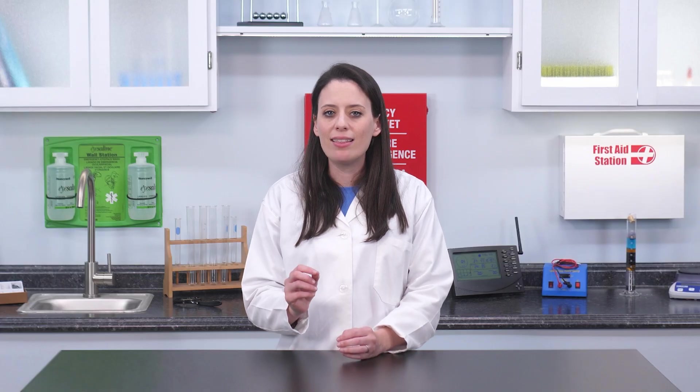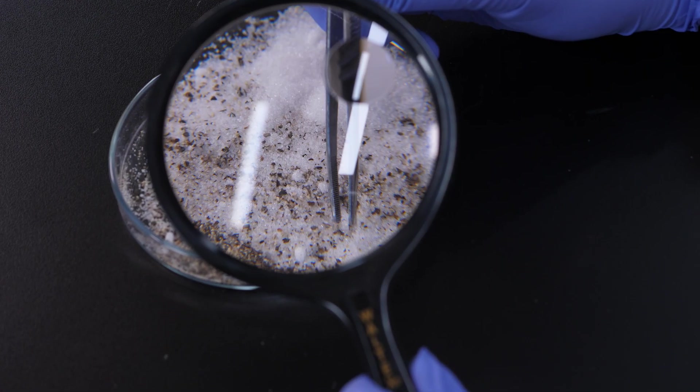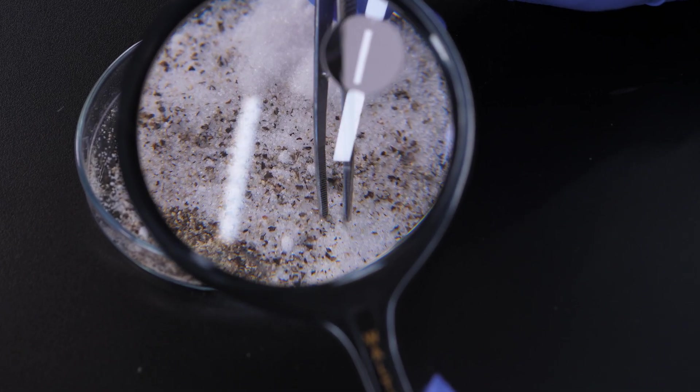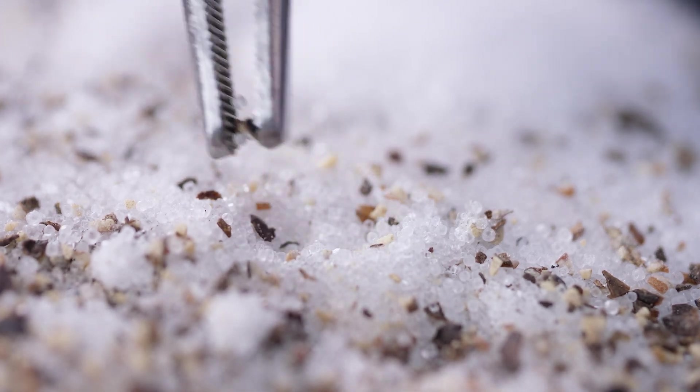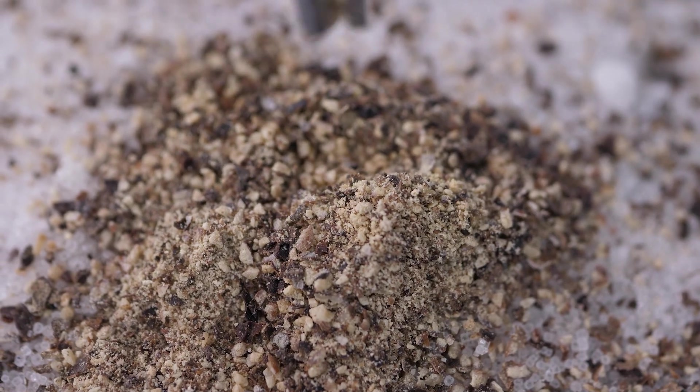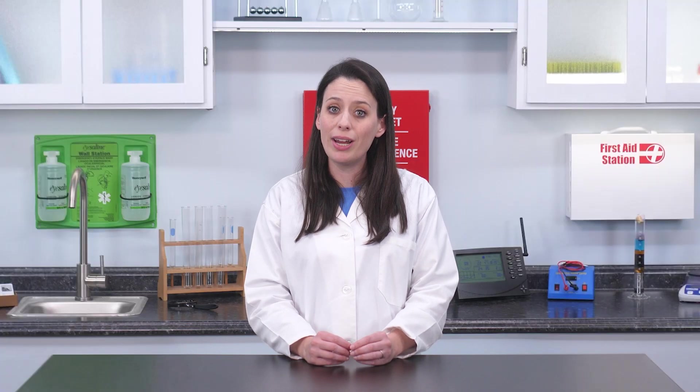Earlier, we said that the components of a mixture can be separated by physical means. Let's look at this heterogeneous mixture of salt and pepper and demonstrate how to separate its components. With a magnifying glass and an extremely steady hand, we could pick out all the grains of pepper, but this would take a long, long time. We could speed up the process by using filtration.